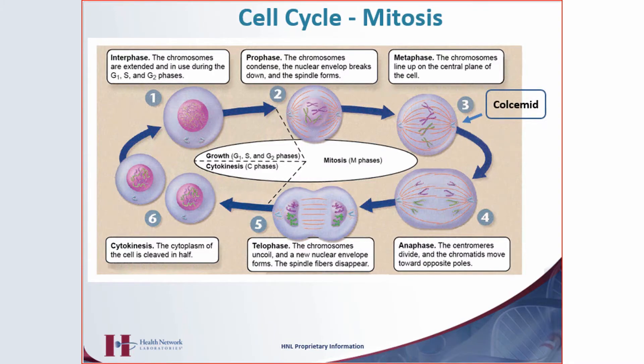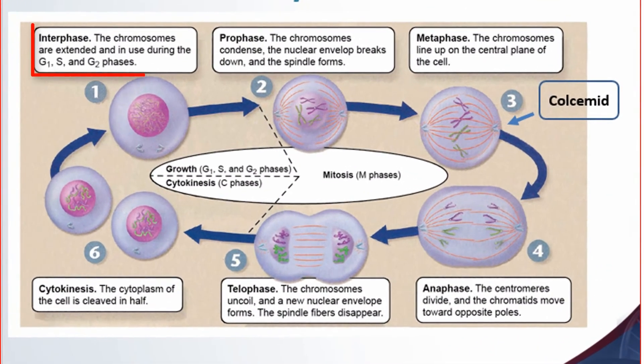This is a close-up of the mitotic stage. We have the interphase cells — this is G1, S, and G2 phases. This is what the cell looks like.